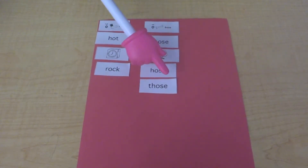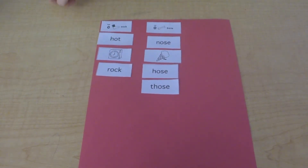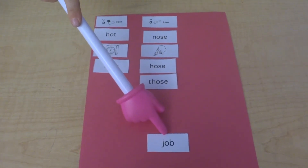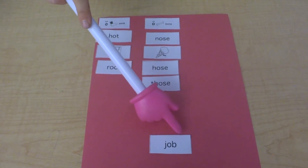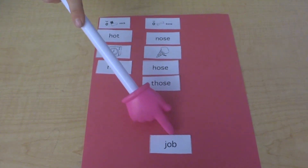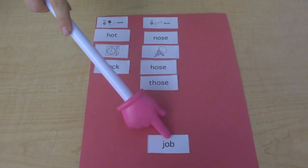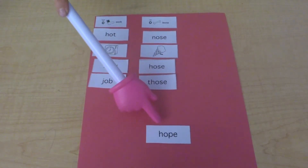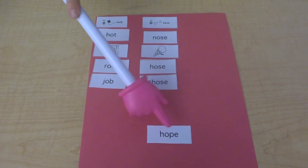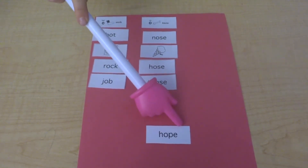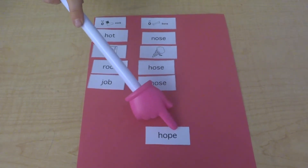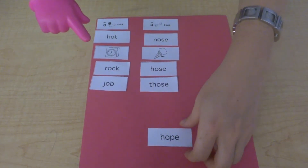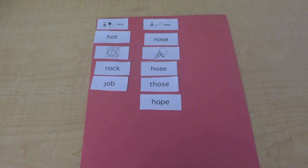Yeah, we hear 'oh,' so 'those' goes in the 'oh' column because of that 'e' at the end. You're doing an awesome job! Let's do two more. Let's do the sounds of this word to figure out what it is: job. In job, what do you hear — 'ah' or 'oh'? Yeah, we have 'ah' because it's between those two consonants. Last one — say those sounds with me: h-oh-p, hope. I knew to say 'oh' here because I noticed there was an 'e' at the end, and that 'e' at the end makes that letter say its name. So hope goes in our 'oh' column.